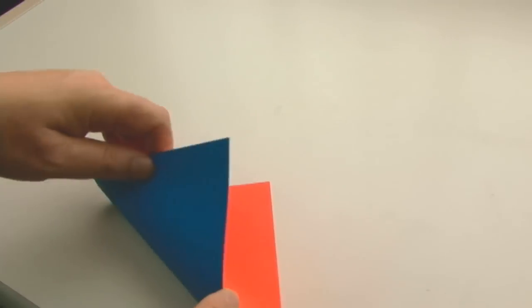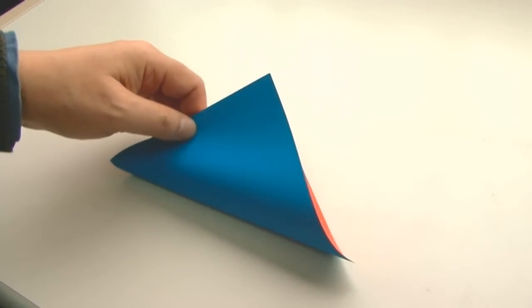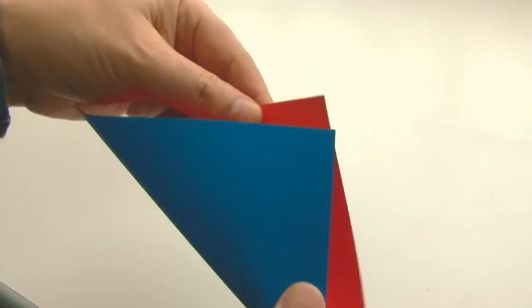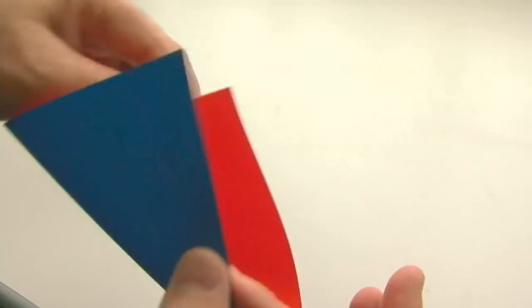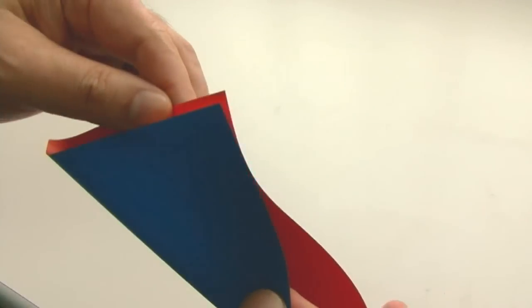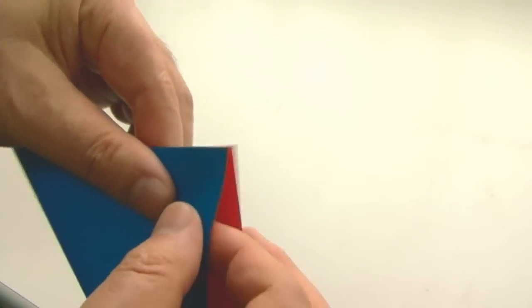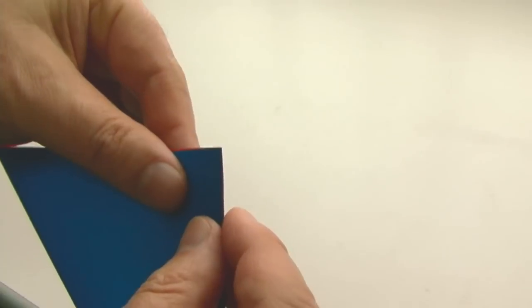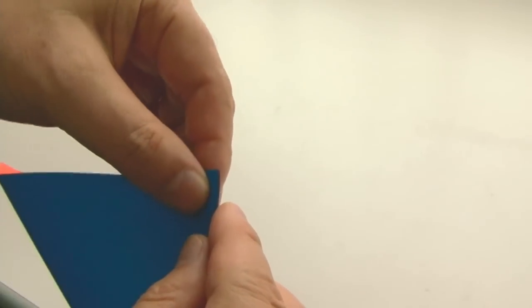First step is exactly fold. Use paper is square. First step is very easy. Fold diagonal, you know. Exactly, exactly fold.